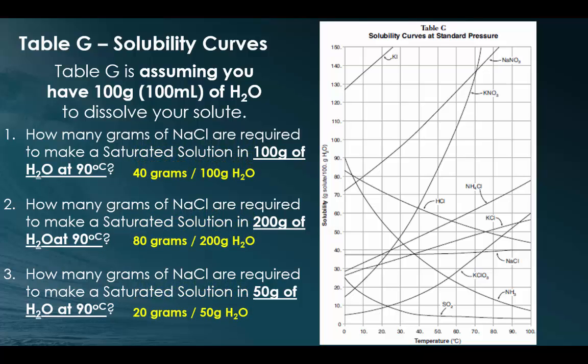All right, so you should have realized in the very first one, based off of normal conditions, 40 grams of sodium chloride can go into 100 grams of water. For question two, because we're doubling the amount of water, we have to double the amount of solute. And for question three, because we have half of the amount of solvent needed to dissolve, we need half of the amount of solute to dissolve. Remember, this is all proportional.